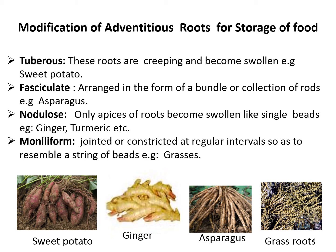Examples of nodulose roots are ginger and turmeric. Another form is moniliform, also called beaded roots, where roots are jointed or constricted at intervals and give a string-of-beads appearance. An example is grasses.